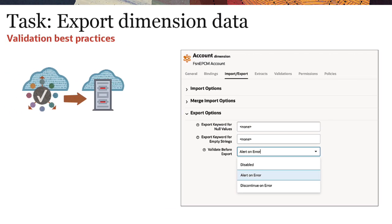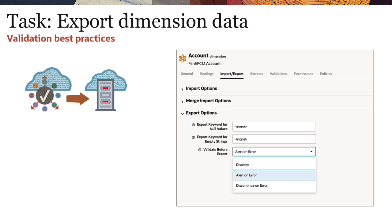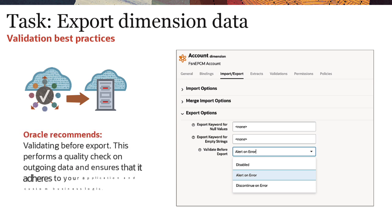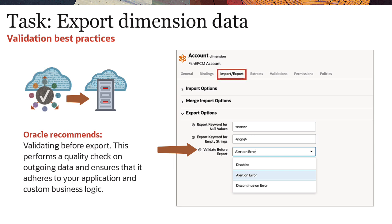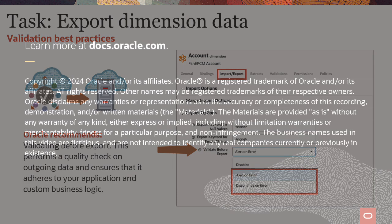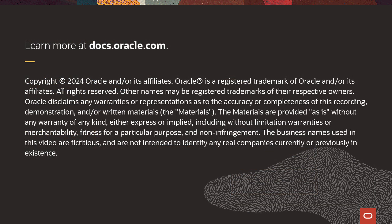Finally, let's look at exporting data to external systems. It's best to validate outgoing data to ensure that it adheres to your application and custom business logic. Oracle recommends selecting the Export Configuration option to run validations on export. Enable validations in a dimension's Import-Export settings by selecting either Alert on Error or Discontinue on Error. To learn more, visit docs.oracle.com.